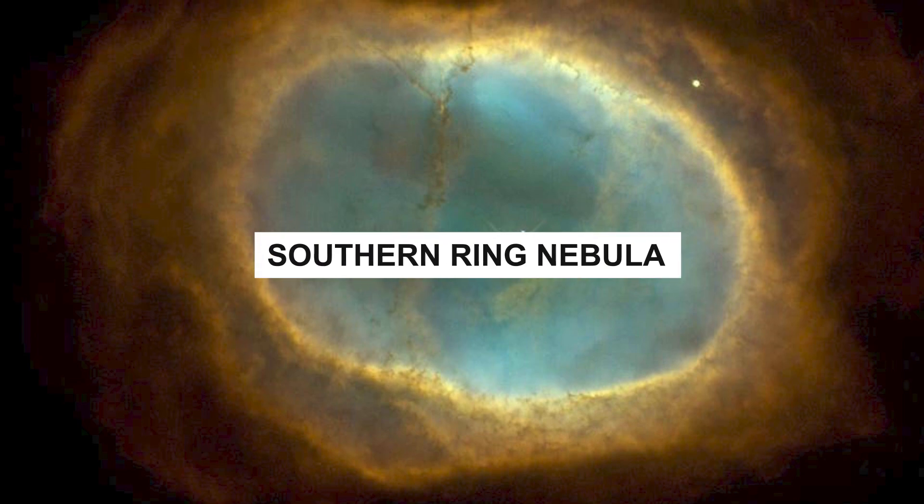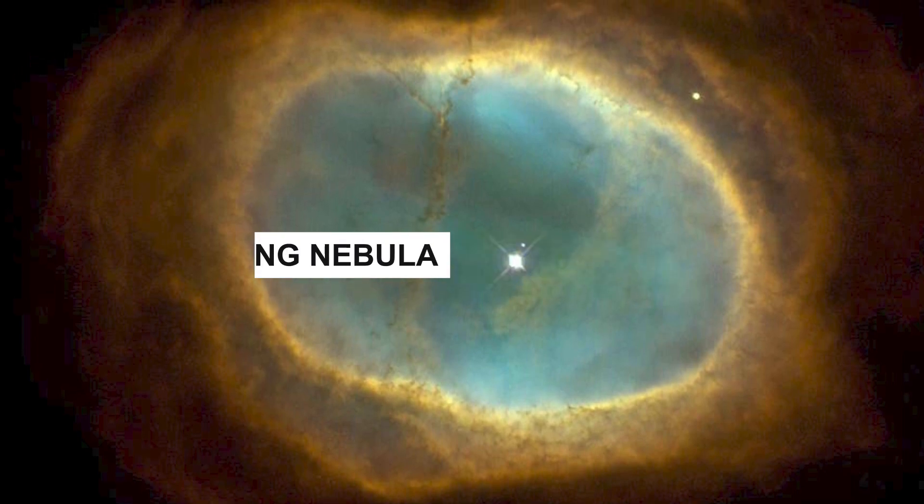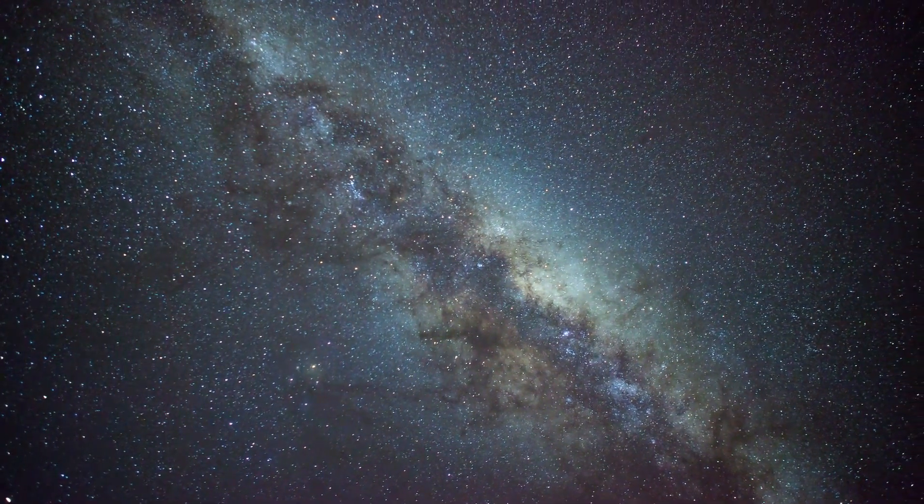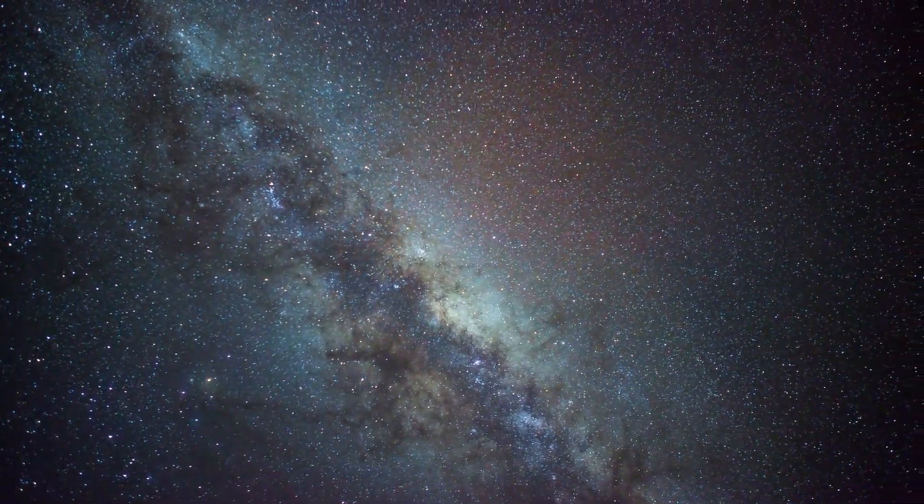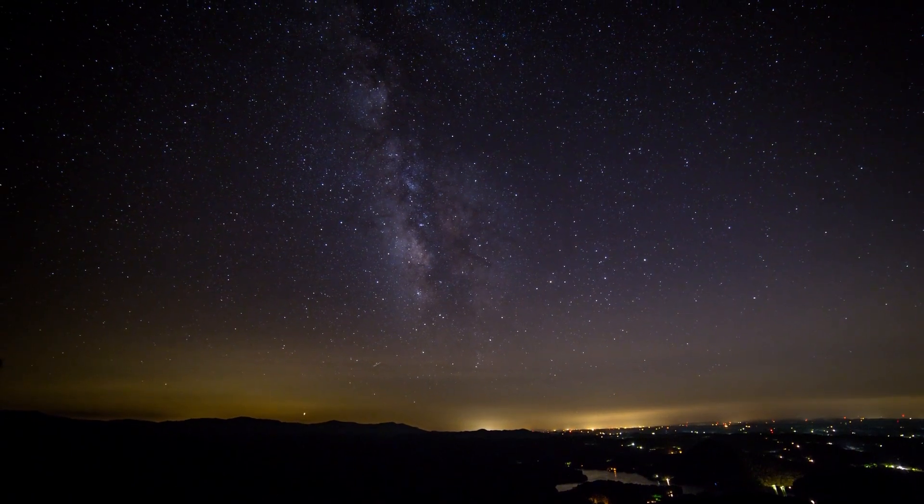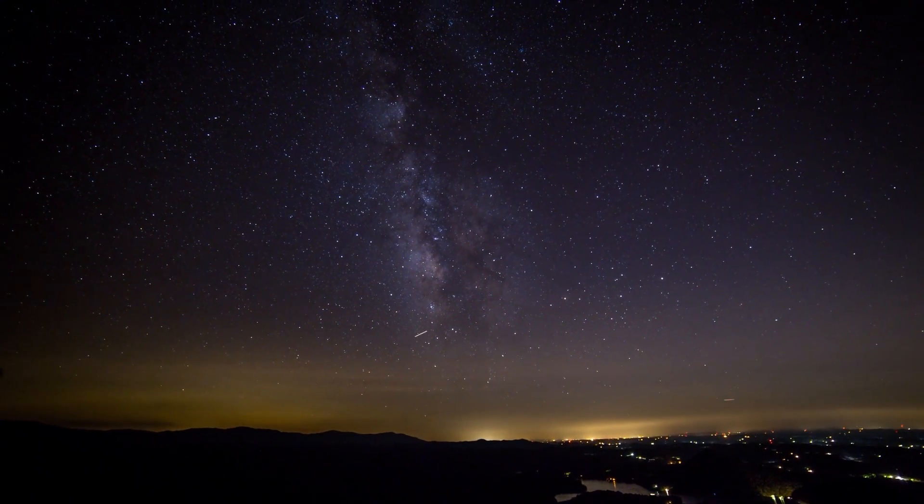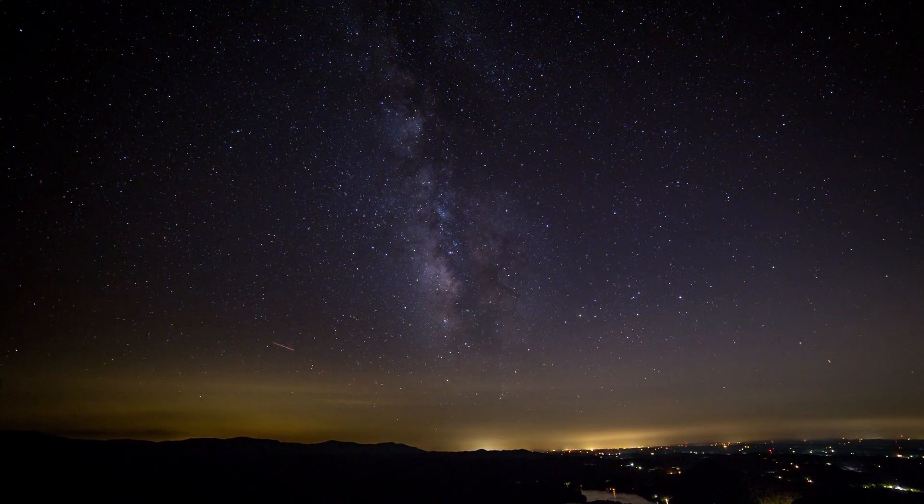Image of a Dying Star. Southern Ring Nebula. The Southern Ring Nebula, a planetary nebula, is depicted by James Webb in another startling photograph while it's dying, named NGC 3132. The captured star is 2,500 light-years away.